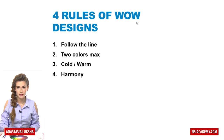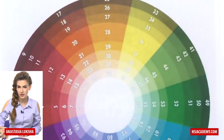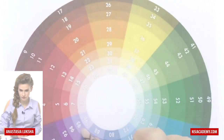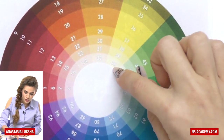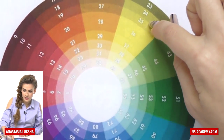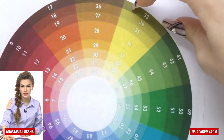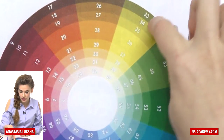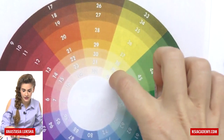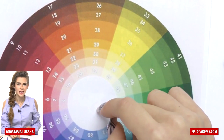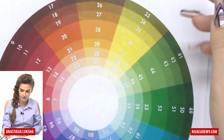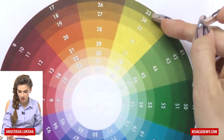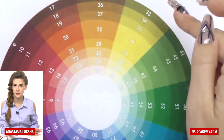The first rule is follow the line. As you can see, there are actual lines — colors within the circle and also lines. So if you take any line, let's take this one, like light yellow, and if you follow the line, then all colors that lie within this line will definitely match. For example, dark olive, yellow, light yellow, pastel yellow — they will match, as well as white. White is in the center, so it matches everything, as well as black.